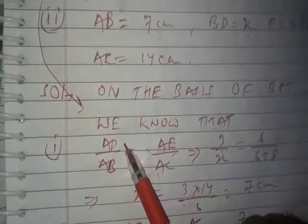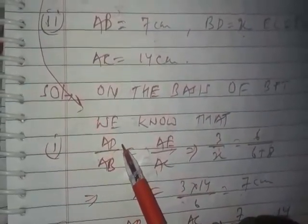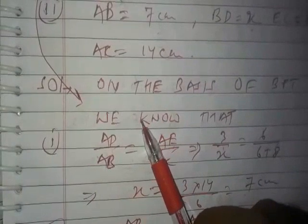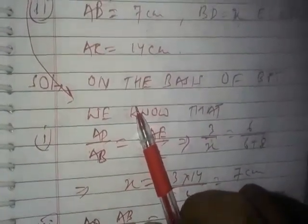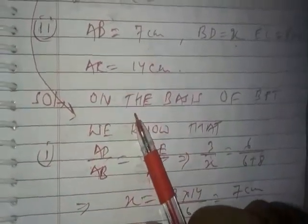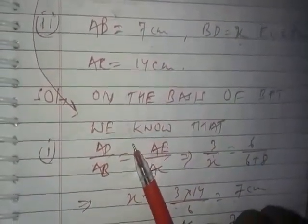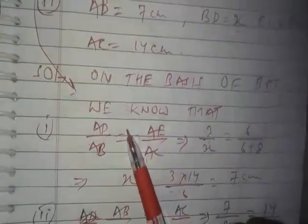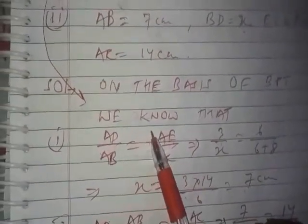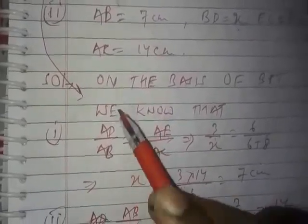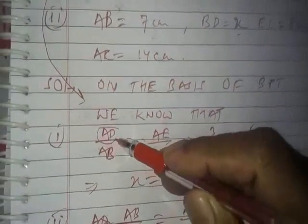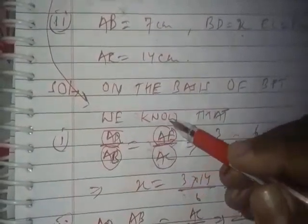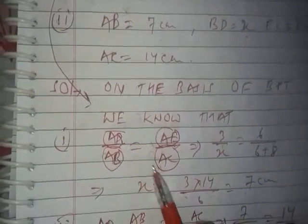A corollary is a statement which can be obtained on the basis of a theorem. In simple language, if we have any statement, all the statements formed from it are called corollaries of that statement. The corollary of BPT states that the ratio of the upper line segment to the whole line segment is equal to the ratio of the upper line segment to the whole line segment on the other side.